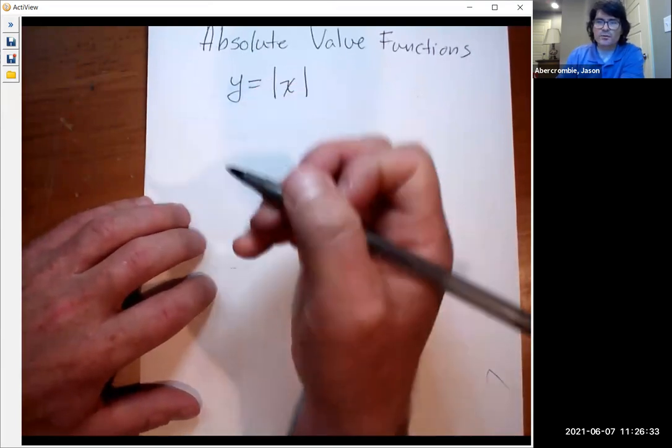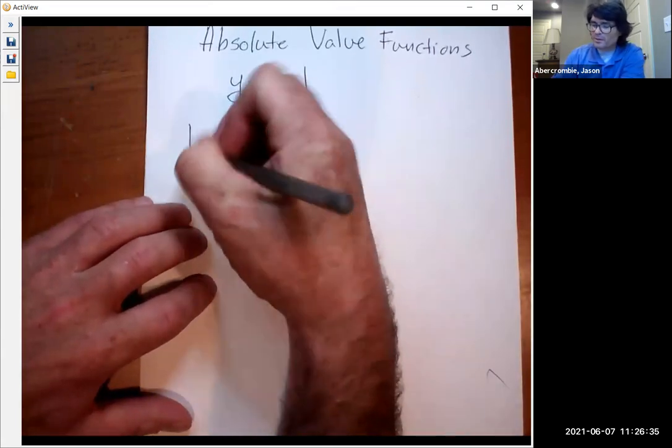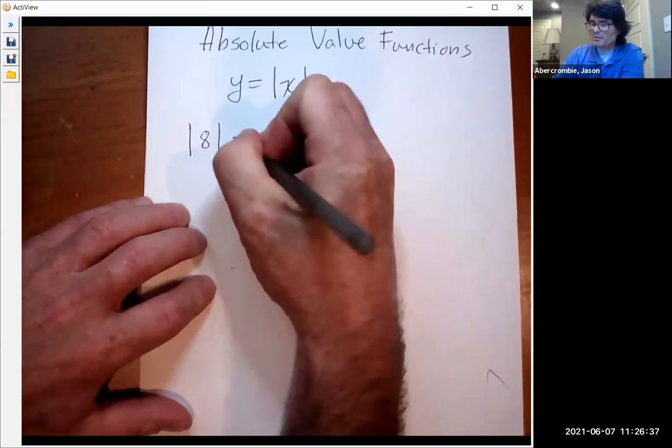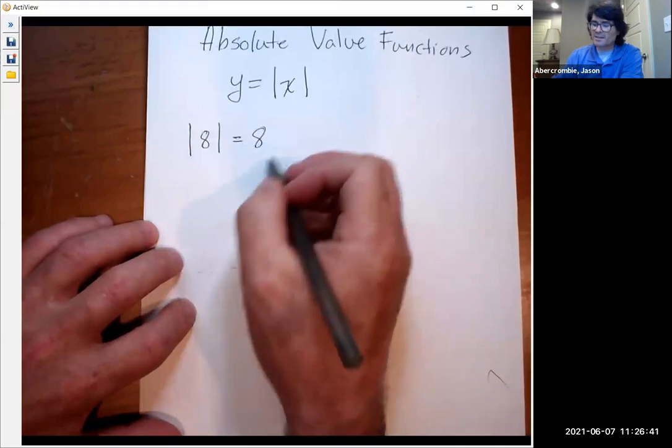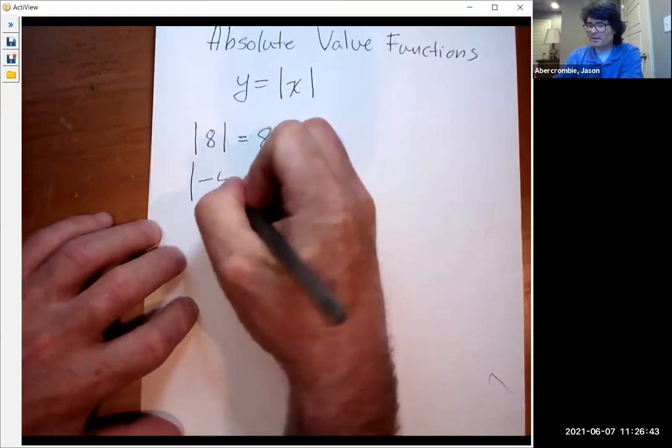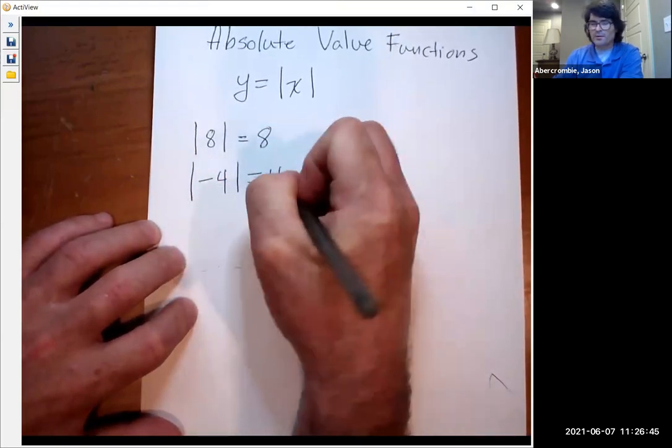The kind of short version of how the absolute value works is many people will say it turns your number positive. The absolute value of eight is eight. The absolute value of negative four is positive four and so forth.